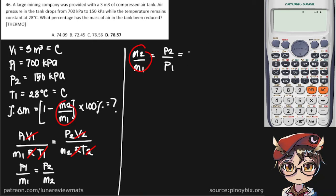So we just need to put our values in. This is 150 over 700, and that gives us 0.2143.